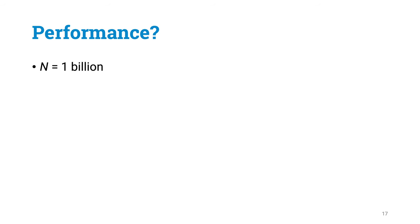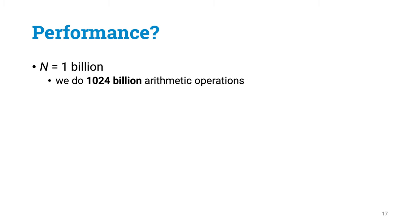Let's benchmark. Let's say n is 1 billion. Now in each step we will do two arithmetic operations, one multiplication and one addition. And there are 512 input values, so overall we will do 1024 billion arithmetic operations.